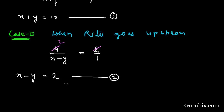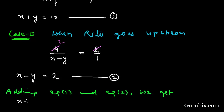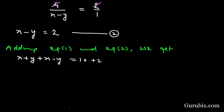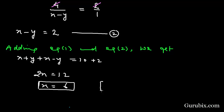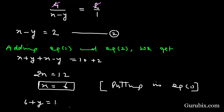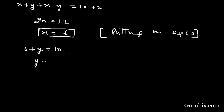Now we shall apply the elimination method to solve this pair of equations. Adding equation 1 and equation 2: x plus y plus x minus y equals 10 plus 2. The y terms cancel, giving 2x equals 12, so x equals 6. Substituting x equals 6 into equation 1: 6 plus y equals 10, therefore y equals 4.